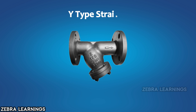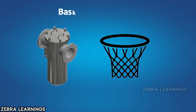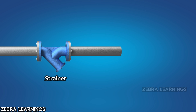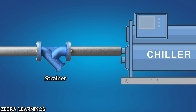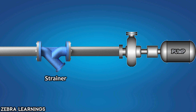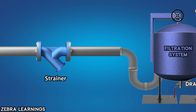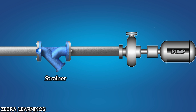We call it a Y-type strainer because it has a Y shape. Similarly, we call it a basket-type strainer because it has a basket shape. We can install strainers in pipelines that circulate water, such as those for chillers, AHUs, pumps, and filtration systems. By filtering out unnecessary dust and debris in the water flow, strainers help prevent the debris from entering the system, which could damage it.